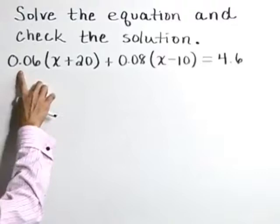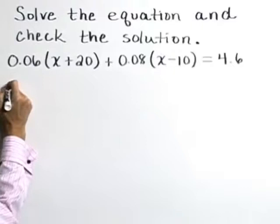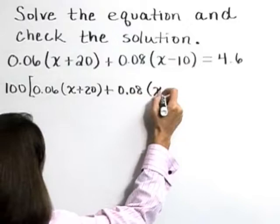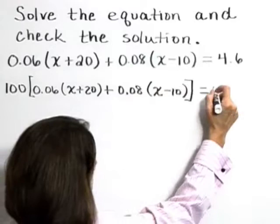I'd like to start here by multiplying both sides through by 100 to clear out these decimal values. So let's take 100 times the left and we'll take 100 times the right hand side as well.